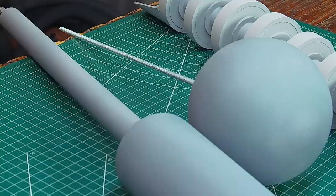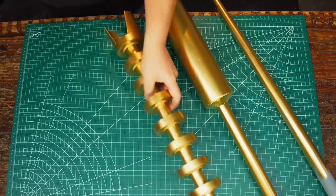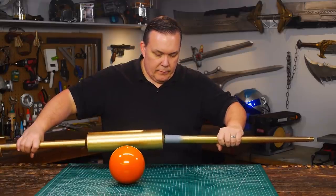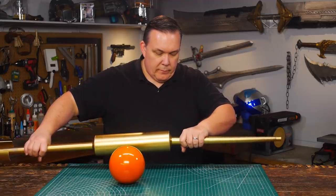A coat of primer, some sanding and another coat of primer later and I spray the three sections gold and the ball is a gloss orange. All the pieces screw together easily and the table leg just barely fits inside the power cell.